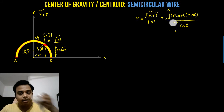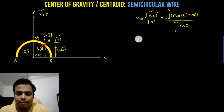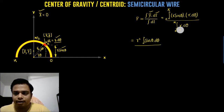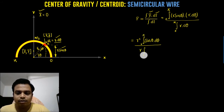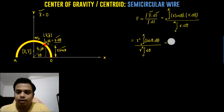Here we go: R² can be taken as common, and the remaining integrand is sin(θ)·dθ in the numerator. In the denominator, R can be taken outside the integral with limits zero to π, leaving dθ inside. The integral of sin(θ) is −cos(θ), so after integration we get one R remaining in the numerator with the result [−cos(θ)] evaluated from zero to π.